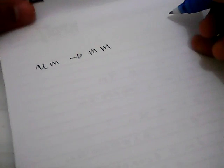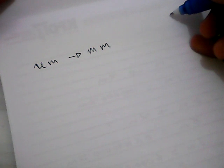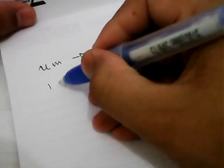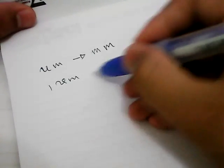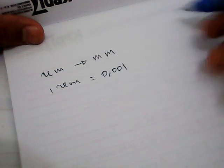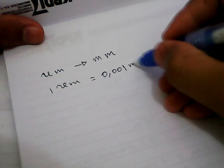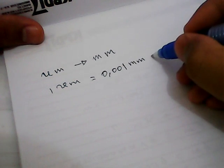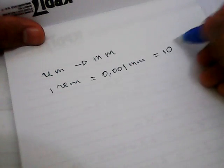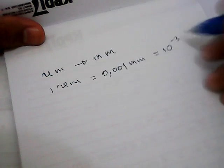Before we start solving a problem, I'll give you an example. We need to know that 1 micrometer is equal to 0.001 millimeters, or it equals to 10 power minus 3 millimeters.